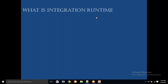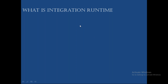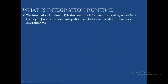We have three different types of computational infrastructure available in Azure Data Factory, and I will talk about those when discussing integration runtime types. Integration runtime — that is IR. If somebody asks what is IR, it is nothing but integration runtime. IR is the compute infrastructure used by a data factory.